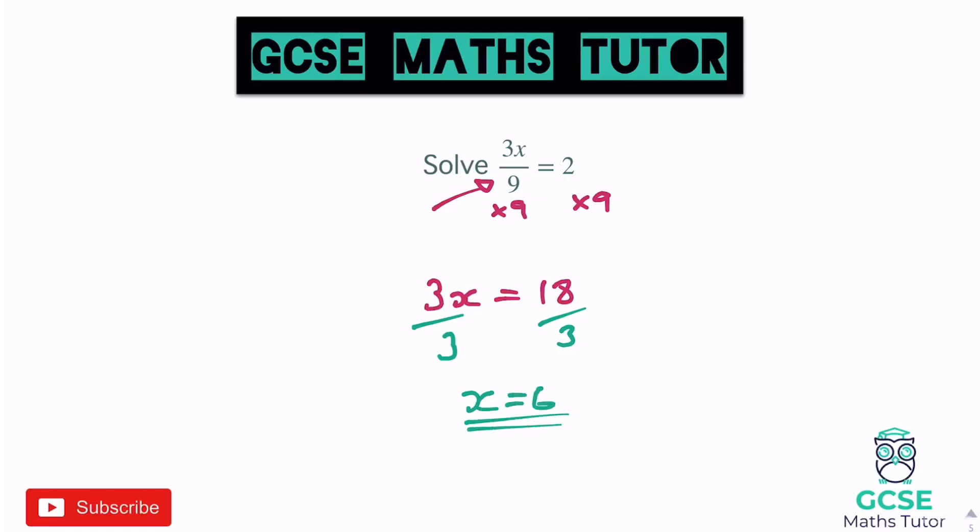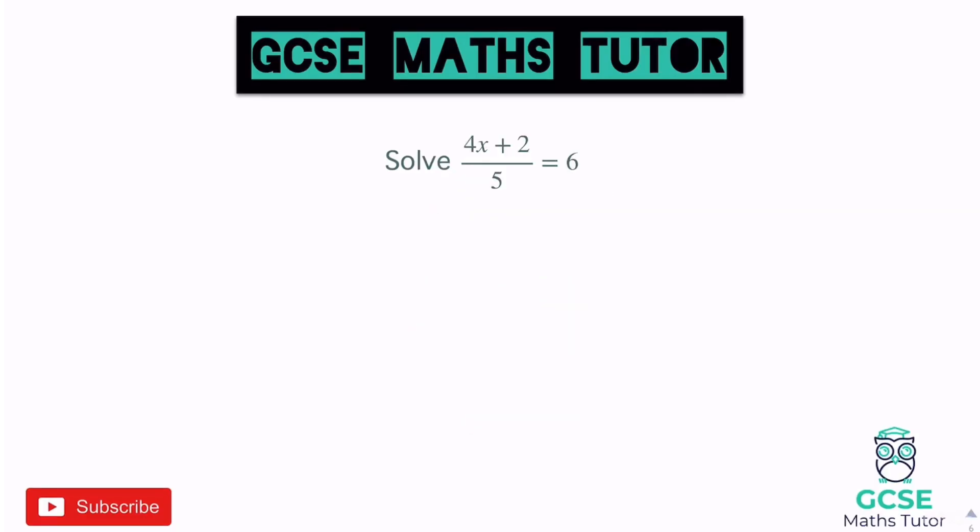Remember: when you have a fraction in the question, to remove that denominator you multiply both sides by whatever's on the bottom to reverse the divide. Let's look at one that's a little more complicated: solving (4x plus 2) all over 5 equals 6.